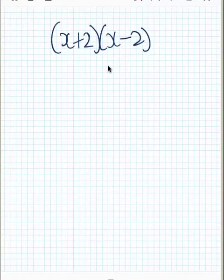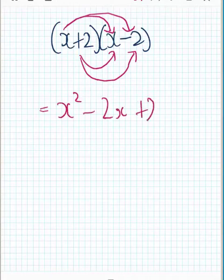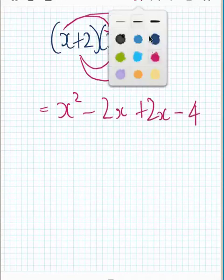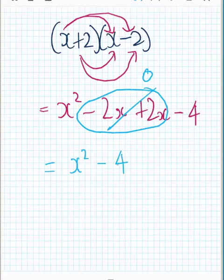Go ahead and expand this yourself. We've got x times x and x times negative 2, then 2 times x and 2 times negative 2. So we've got x squared, then minus 2x, then plus 2x, and then 2 times negative 2 is negative 4. When we have difference of perfect squares, this always happens — the x's will always cancel out. Minus 2x plus 2x is 0, and we are left with x squared minus 4. The x's are always eliminated.